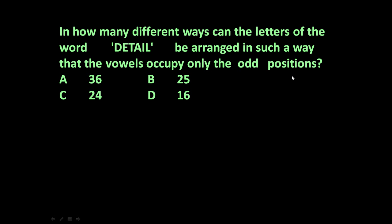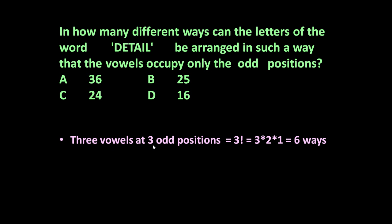The vowels should occupy only the odd positions. There are six letters in this word and the odd positions are one, two, and three. There are three odd positions, and three vowels — E, A, I — at three odd positions can be arranged in factorial three ways.